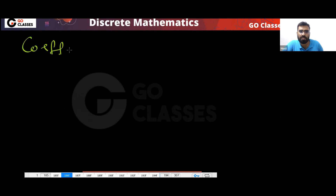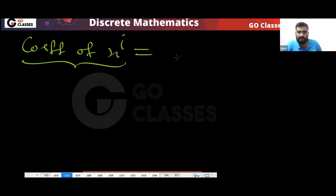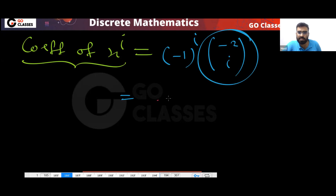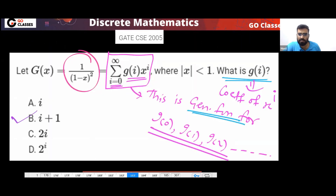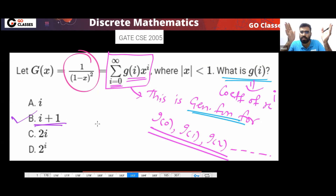So the coefficient of x^i is equal to minus one power i multiplied by minus two C i. And this value — minus one power i times minus one power i — gives us one plus i. So your answer will be i plus one. Isn't it simple? All the GATE questions on generating functions are very simple. Every GATE question from generating functions is very simple.